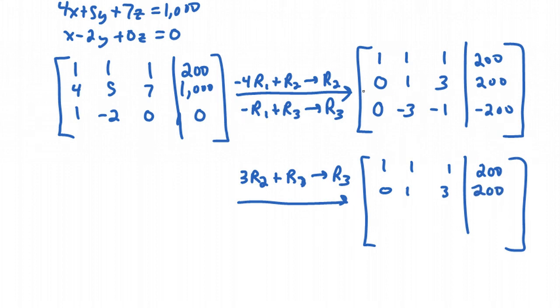We do 3 times this row plus this row. 3 times 0 is 0, and 0 plus 0 is 0. That's good. We don't want to mess up that 0. Then 3 times 1 is 3, 3 plus minus 3 is 0. And that's also good. We wanted to have 0s down in this lower left triangle. And then 3 times 3 is 9, 9 plus minus 1 is 8. And then 3 times 200 is 600, 600 plus minus 200 would be 400.